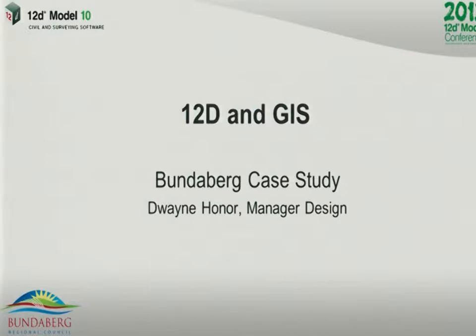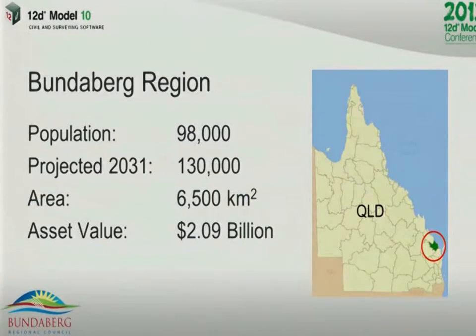I'm going to be talking about 12D and GIS, and specifically what we've been doing at Bundaberg Regional Council in recent times. A bit about Bundaberg to start with: population 98,000, we're expecting that to grow to 130,000 by 2031. We have six and a half thousand square kilometres of geographic area and our total infrastructure asset value is just over $2 billion.